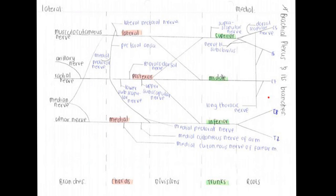It's extremely important to know that your roots originate from C5, C6, C7, C8, and T1, and that your roots are found between your anterior and medial scalene muscles. It's also very important to mention your supraclavicular and infraclavicular branches — those small branches you might think of ignoring, like your long thoracic nerve and your dorsal scapular nerve, are actually very important and should be included in your drawing.